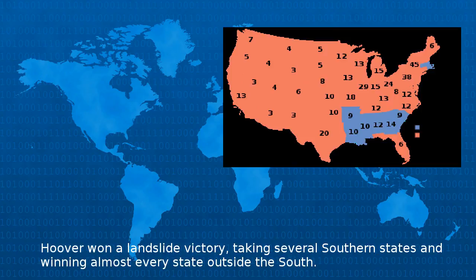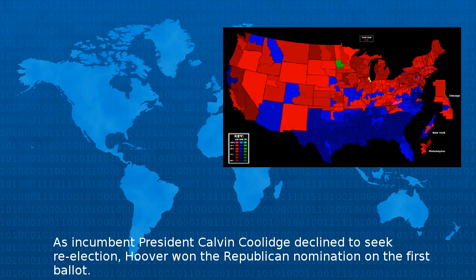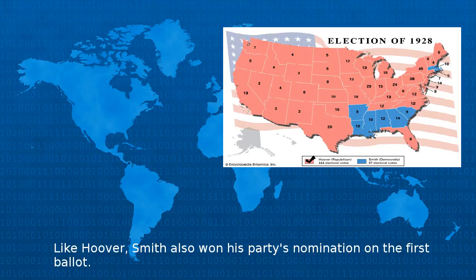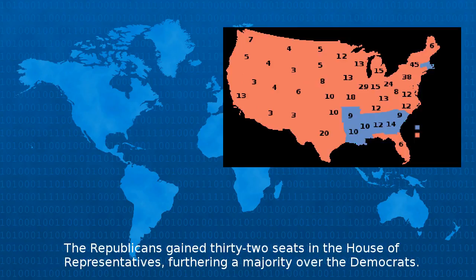taking several southern states and winning almost every state outside the South. As incumbent President Calvin Coolidge declined to seek re-election, Hoover won the Republican nomination on the first ballot. Like Hoover, Smith also won his party's nomination on the first ballot.